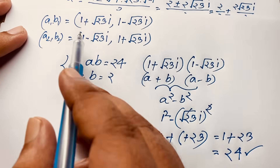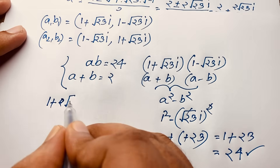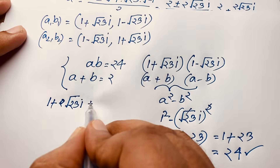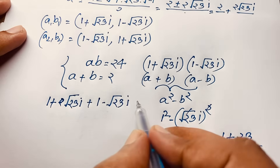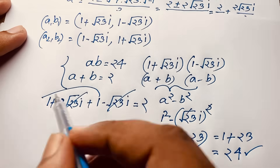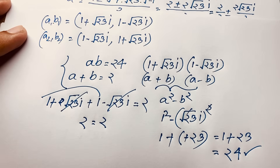Now let's verify a plus b equals 2. a equals 1 plus √23·i and b equals 1 minus √23·i. The imaginary parts cancel out, and 1 plus 1 equals 2. So left hand side and right hand side are both equal. Thank you all — if you enjoy this math olympiad question, please subscribe to my channel for other interesting videos. Goodbye, take care.